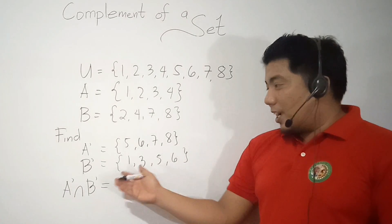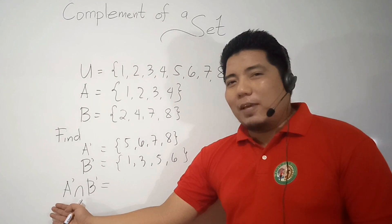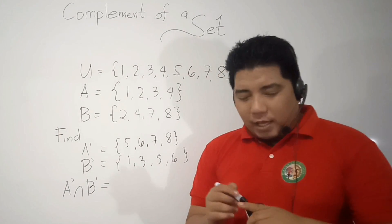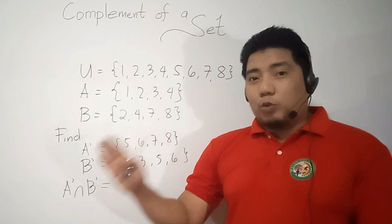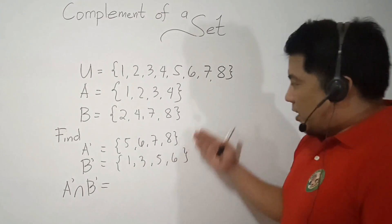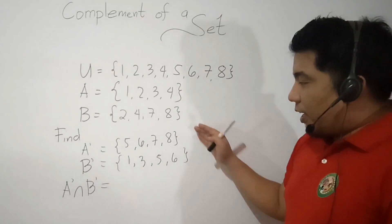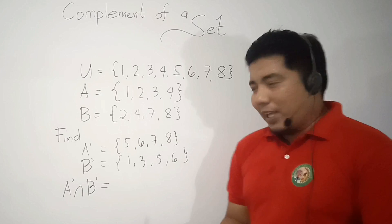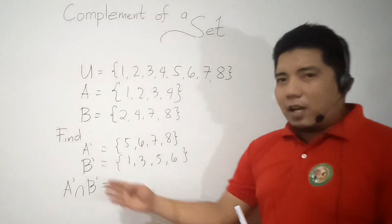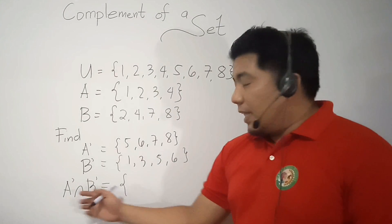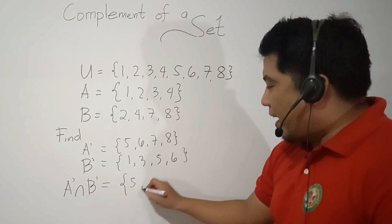What is the intersection of the complement of A and the complement of B? Intersection is where the two sets have elements in common. The complement of A is {5, 6, 7, 8} and the complement of B is {1, 3, 5, 6}. We can see that 5 and 6 are available in both sets. Therefore, the intersection of the complements of A and B is {5, 6}.